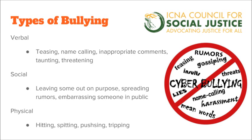The next type is social bullying. Examples include leaving someone out on purpose, spreading rumors, and embarrassing someone in public. Leaving someone out on purpose includes situations like, for example, a bully says to a group of people...